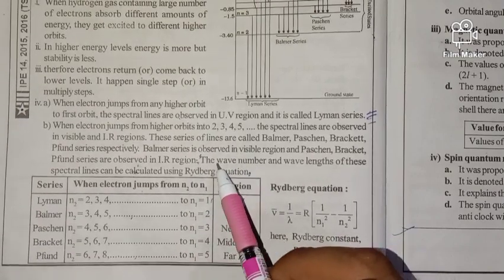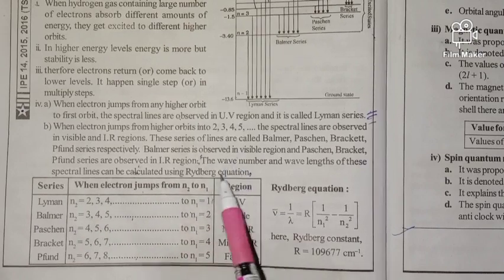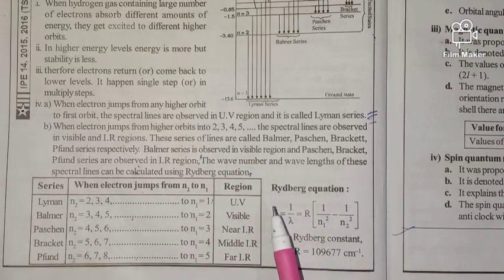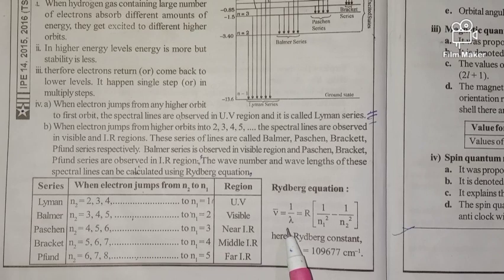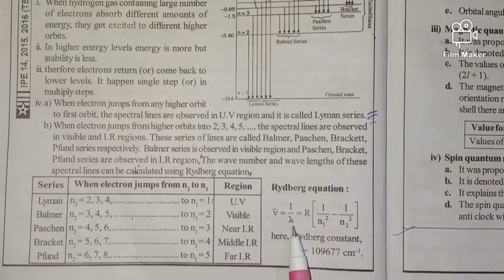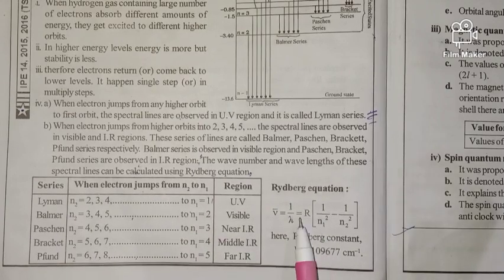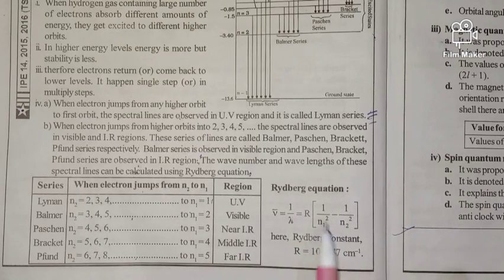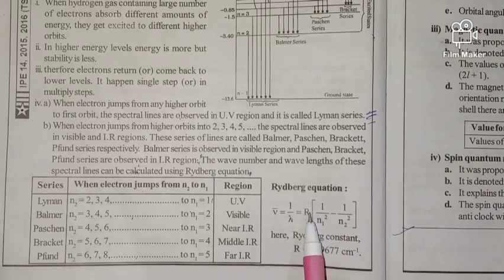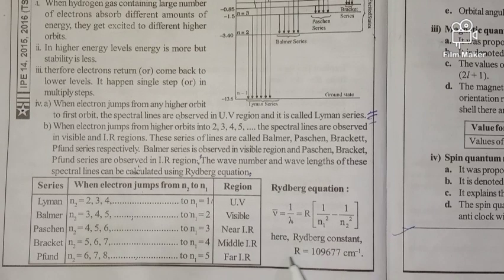The wave number and wavelength of these spectral lines can be calculated using the Rydberg equation: 1 over lambda equals R times the quantity 1 over n1 squared minus 1 over n2 squared, where R is the Rydberg constant with value 109677 per centimeter.